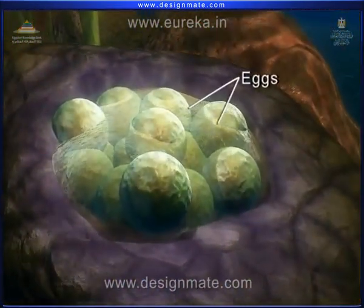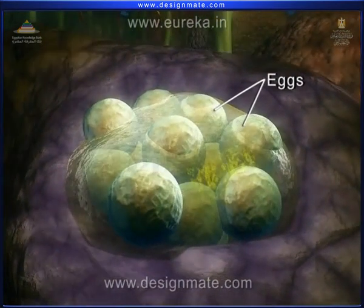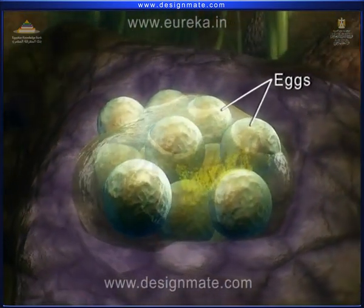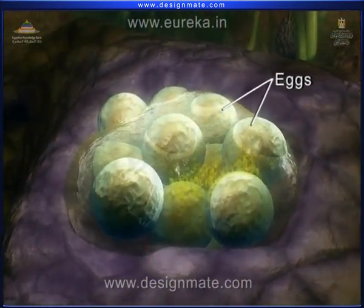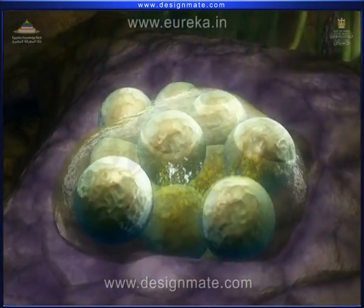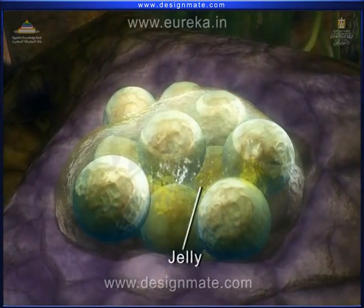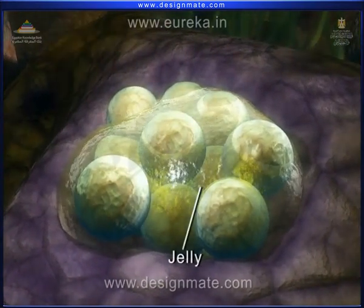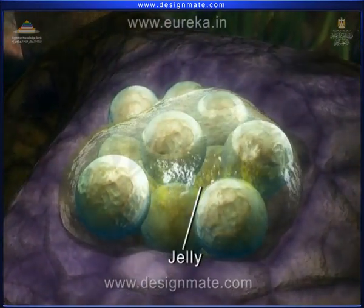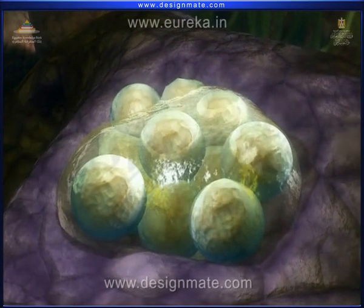The eggs of the frog are found in clusters laid in water. The eggs stick to each other by a jelly, and this whole cluster of eggs is called the spawn.